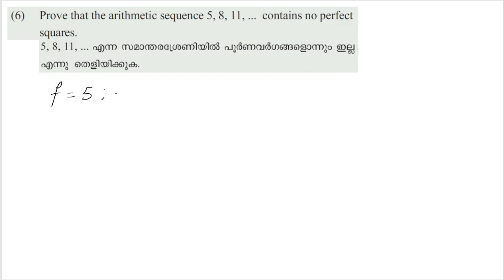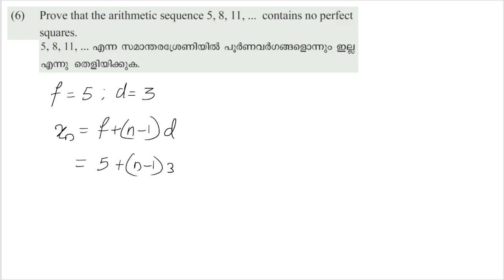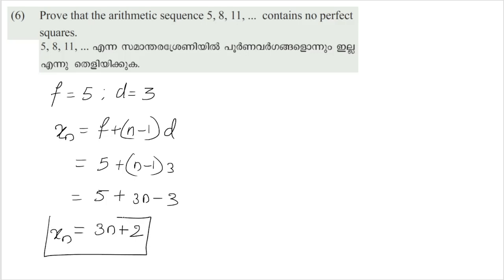First, the common difference d is equal to 3. So, the general term is 5 plus 3 into (n minus 1), which gives 5 minus 3 plus 3n, so xn is equal to 3n plus 2.